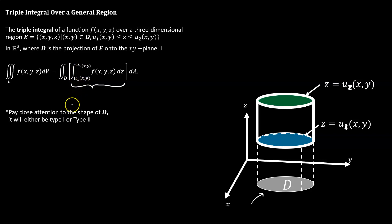It is important to note that the shape of your projection, this shadow d, we need to pay attention to it. Because it could be better to run that as a type 1 with vertical cuts or a type 2 with horizontal cuts. We'll take a look at a couple of examples and I'll show you what I mean.